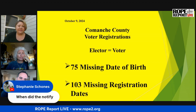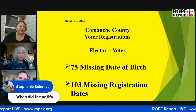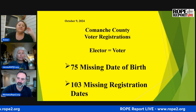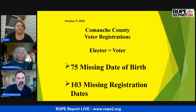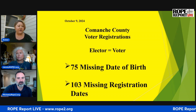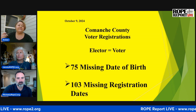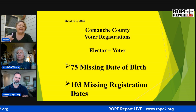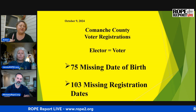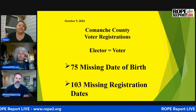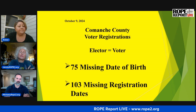I got a poll from October 9th — Comanche County alone, voter registrations. Verbiage is my big thing; people have to learn the verbiage on stuff. An elector is a voter. There are 75 missing dates of birth on voter registrations and 103 missing registration dates, just in Comanche County.